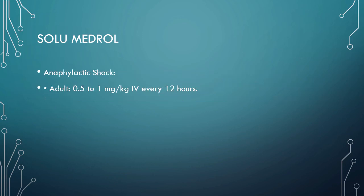Your dose for solumedrol is 0.5 to 1 milligram per kilogram. We can give it IV every 12 hours — basically one dose pre-hospital. The duration will be anywhere from 12 to 16 hours.